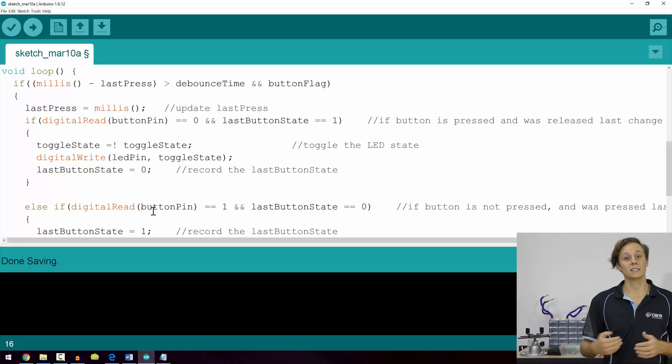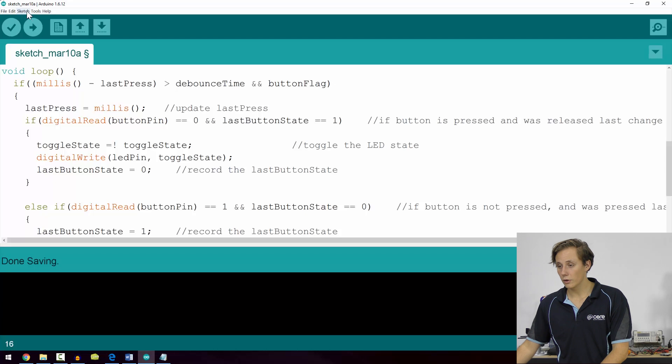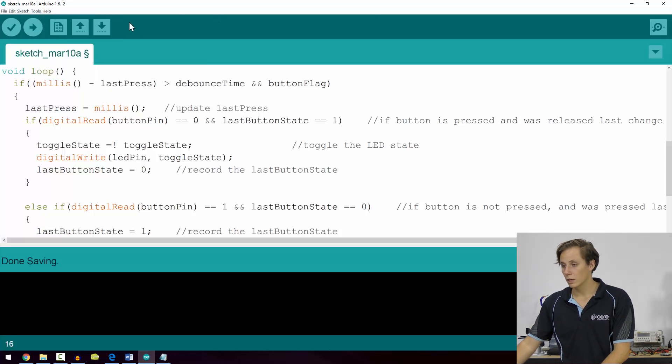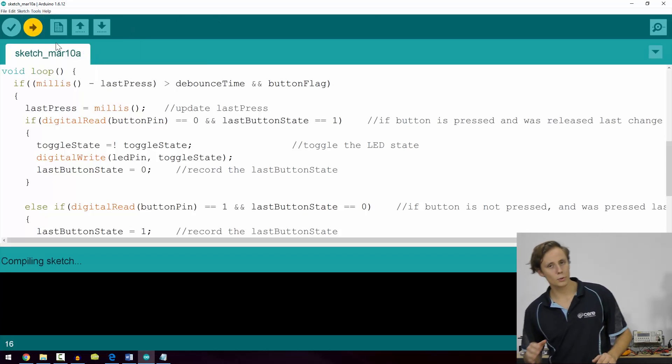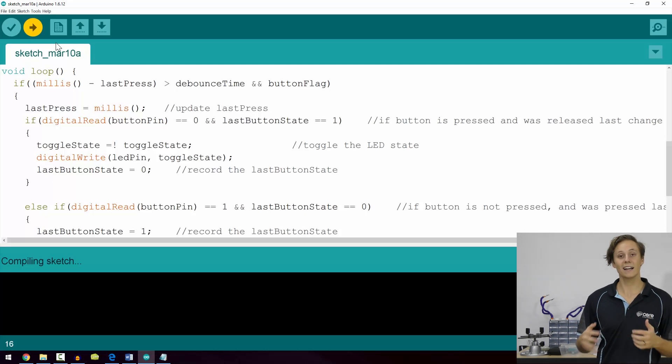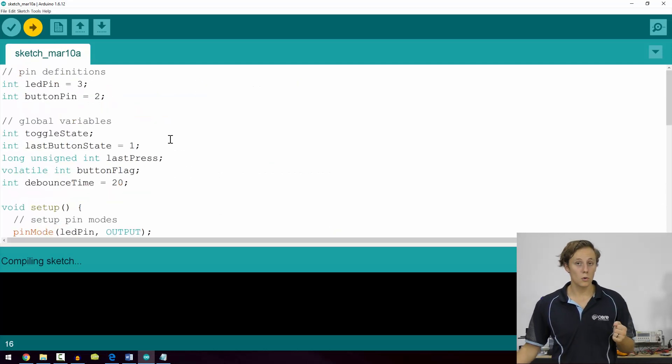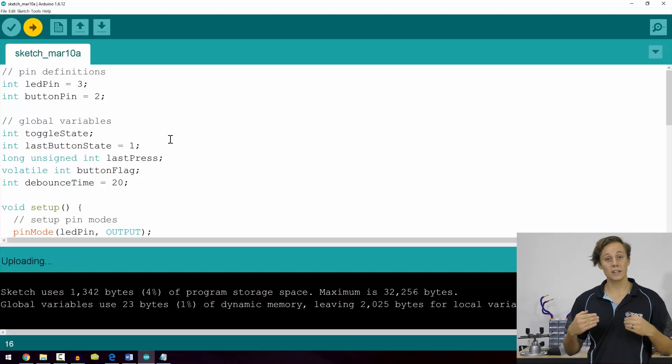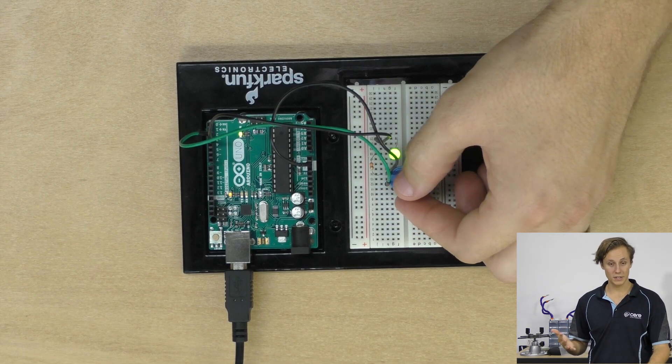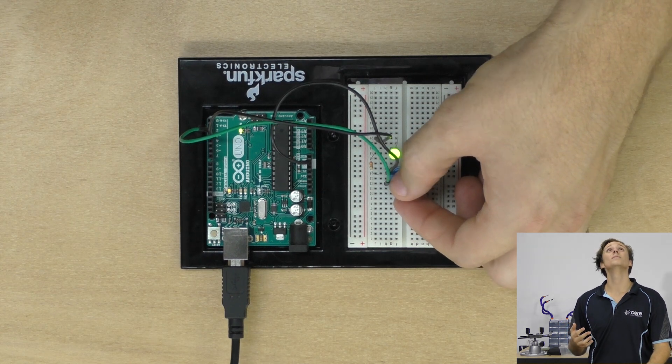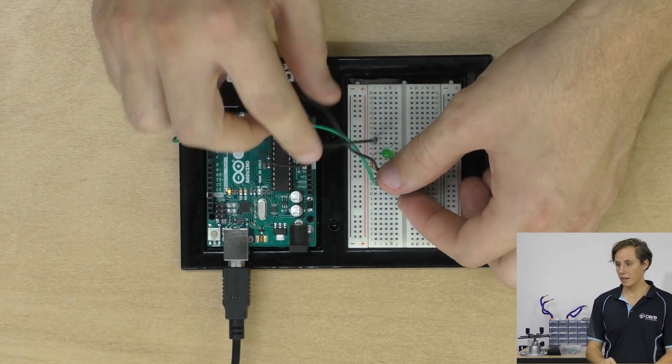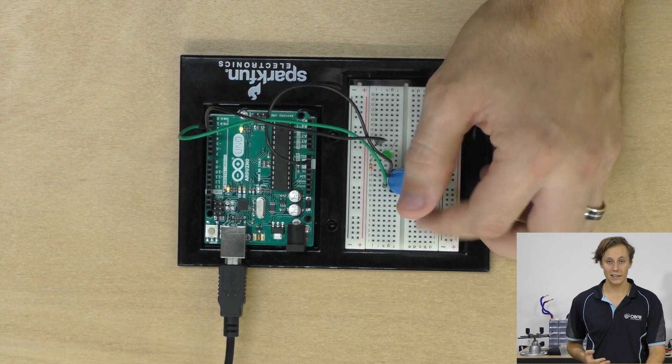So let's go ahead and load it up, make sure we've got the correct settings, hit upload. And it's going to work exactly the same as our previous toggle button example did because it's achieving the same goal, but it's doing it in a much more efficient manner. So when we press it, it's a nice little toggle switch.